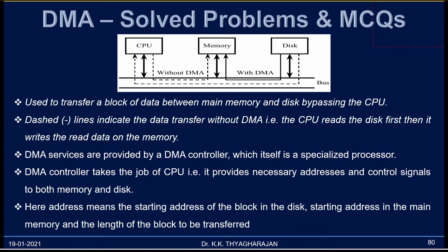DMA is called as Direct Memory Access. Generally, the data from the disk will be read by the CPU and then it will be written by the CPU on the memory. Any program or data should be available in the main memory if the program is to be executed. If DMA is provided, then the data or program may be directly transferred from disk to memory, bypassing the CPU.